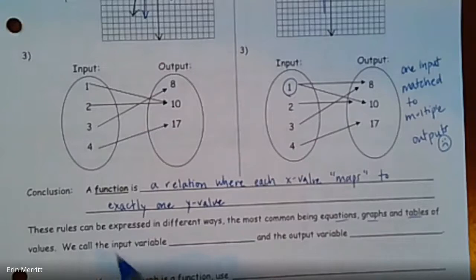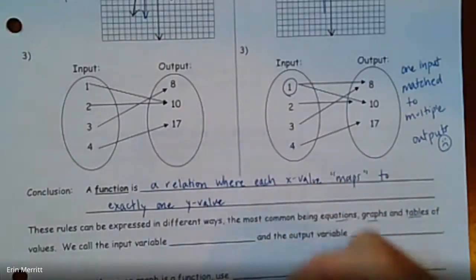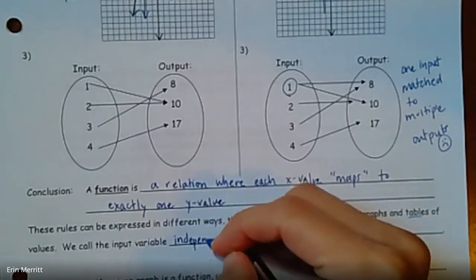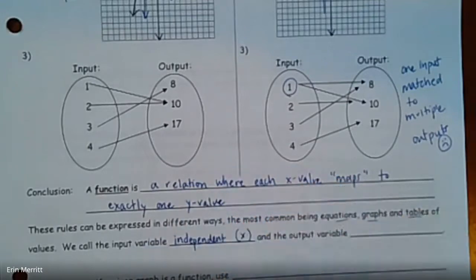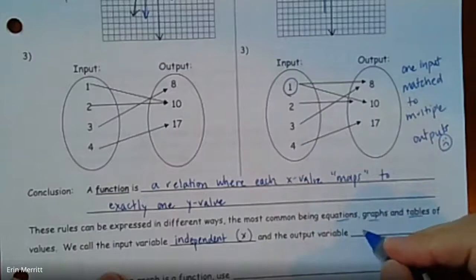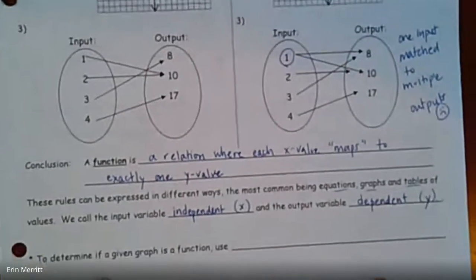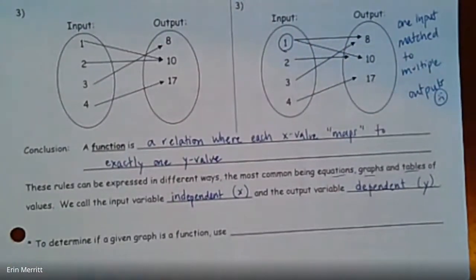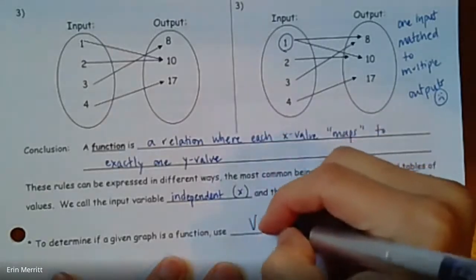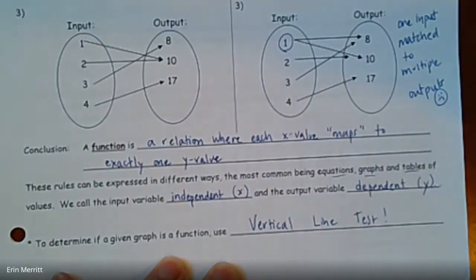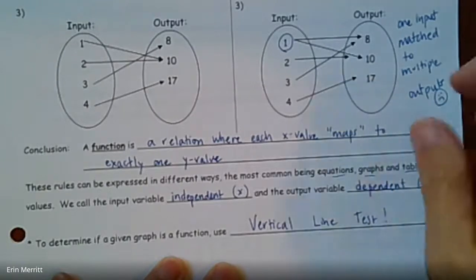And it's saying we call the input variable, that is our typically our x, but it's called the independent variable. And then the output variable, our y is the dependent. The reason for it, x can be anything it wants. The y depends on the x value that you plug in. And then the last thing, to determine if a graph is a function, we use the vertical line test.